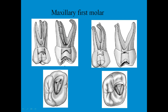For the maxillary first molar, the pulp chamber is large so the access cavity is correspondingly large. Sometimes two root canals are found in the mesio-buccal root, named MB1 and MB2. There is also a disto-buccal root canal and a palatal orifice. If there is no MB2 and only three root canals, the access cavity looks different from the four-canal configuration.